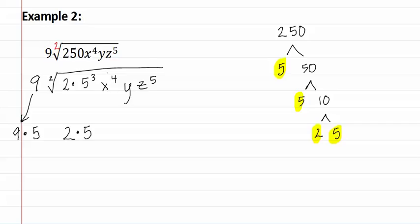X to the fourth, we take the exponent and divide it by the index, or four divided by two, which comes out as x squared, with no remainder. As you can see, we don't have quite enough space for our next variables, so let's move over the pieces that stay on the inside.